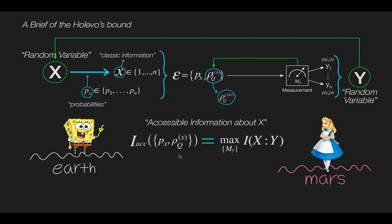In other words, it is the information Alice can access about Bob's random variable X. This quantity is upper bounded by Chi. We call this Chi the Holevo's bound, which Alexander Holevo published in 1973. The Holevo's bound is equal to this formation of entropy.